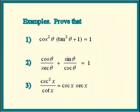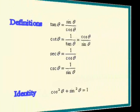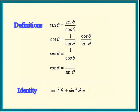Remember tangent, cotangent, secant, and cosecant? They are all defined in terms of sine and cosine, so let's review those. Tangent is sine over cosine. Cotangent is defined to be 1 over tangent, therefore it is cosine over sine. Secant is 1 over cosine. Cosecant is 1 over sine. And the only identity that we'll make use of here is the cosine squared plus sine squared one.